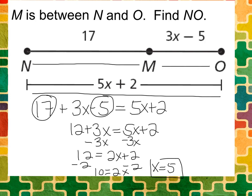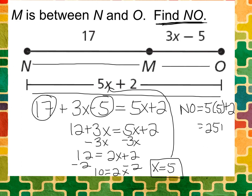Now I isolated the variable and I found out what X equals, but that does not solve my example. I need to find the length of NO. So I'm going to take this 5 and plug it in for X. NO is going to equal 5 multiplied by 5 plus 2. That's 25 plus 2 and that's 27. So NO is 27 in length.